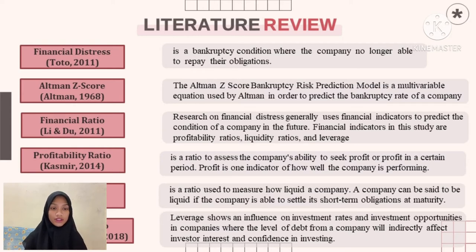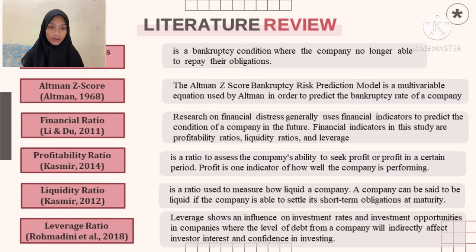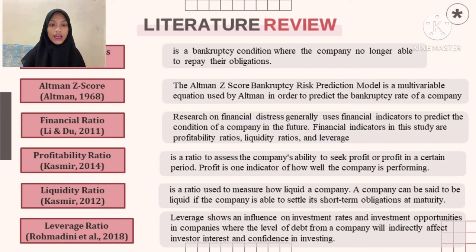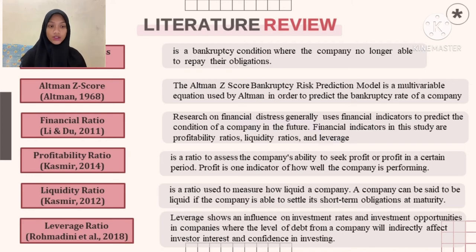For financial distress itself, the definition is a bankruptcy condition where the company is no longer able to fulfill its obligations. The Altman Z-score is a bankruptcy rate prediction model using a multi-variable equation used by Altman to predict the bankruptcy rate of a company. For the financial ratio, research on financial distress generally uses financial indicators to predict the condition of a company in the future, including profitability, liquidity, and leverage.